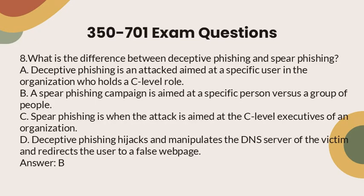Question 8: What is the difference between deceptive phishing and spear phishing? a. Deceptive phishing is an attack aimed at a specific user in the organization who holds a C-level role. b. A spear phishing campaign is aimed at a specific person versus a group of people. c. Spear phishing is when the attack is aimed at the C-level executives of an organization. d. Deceptive phishing hijacks and manipulates the DNS server of the victim and redirects the user to a false web page. Answer: B.